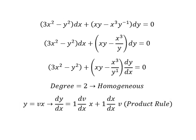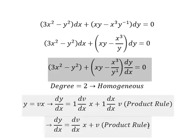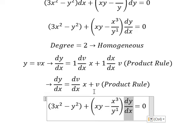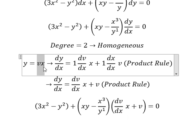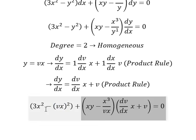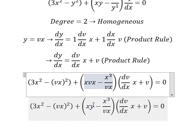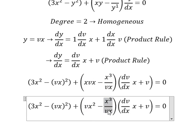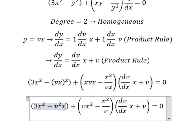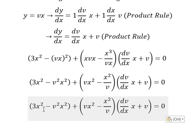Now we can simplify. We substitute y with vx. We have v squared here, v squared over v, and v squared — and now we can cancel v squared on both sides.